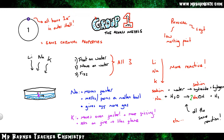This equation is not balanced as written, so you need to make sure the number of symbols on either side are equal. The balanced version has a 2 in front of NaOH, a 2 in front of Na, and a 2 in front of H₂O.